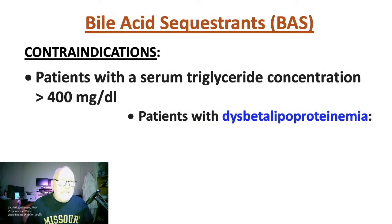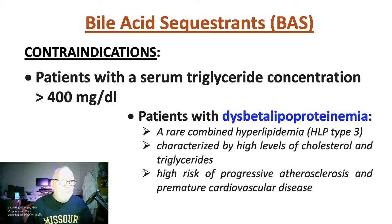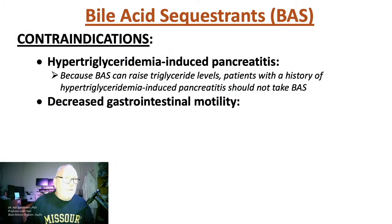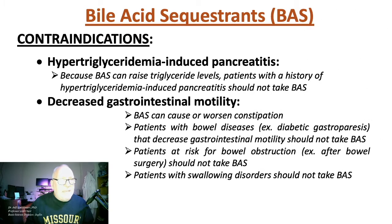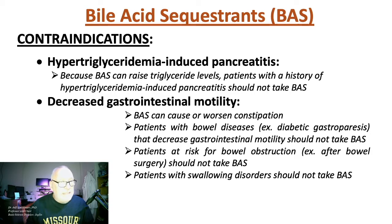These drugs are contraindicated in patients with dysbetalipoproteinemia, a rare hyperlipidemia also called HLP type 3, where high levels of cholesterol and triglycerides place patients at very high risk of progressive atherosclerosis and premature cardiovascular disease. They are also contraindicated in patients with hypertriglyceridemia-induced pancreatitis, decreased GI motility, bowel disease, diabetic gastroparesis, and patients at risk for bowel obstruction after bowel surgery.